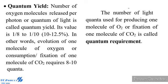Quantum Yield: The number of oxygen molecules released per photon or quantum of light is called quantum yield. Its value is 1/8 to 1/10, that is 10 to 12.5%. In other words, evolution of 1 molecule of oxygen or fixation of 1 molecule of CO2 requires 8 to 10 quanta. The number of light quanta used for producing 1 molecule of oxygen or fixation of 1 molecule of CO2 is called quantum requirement.